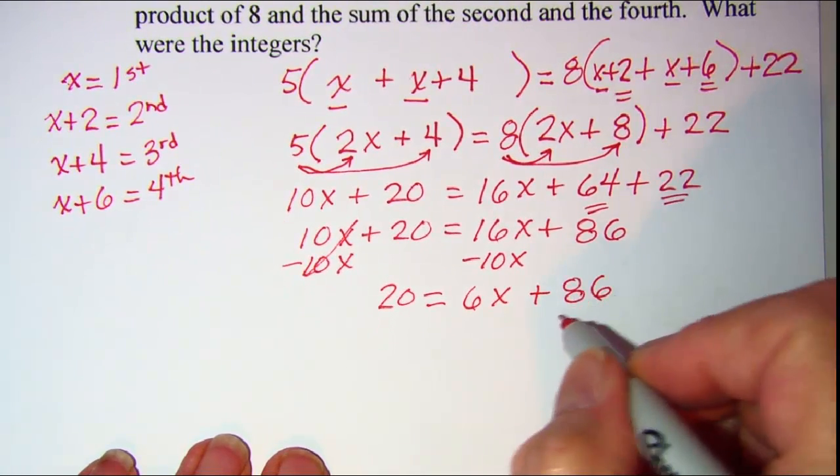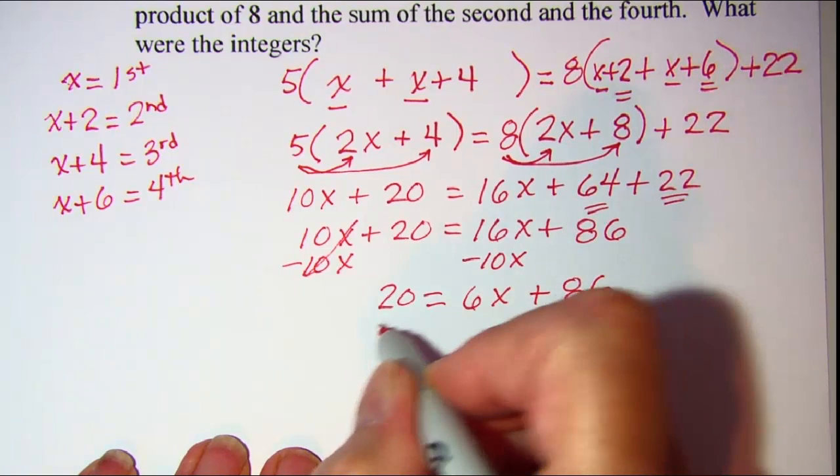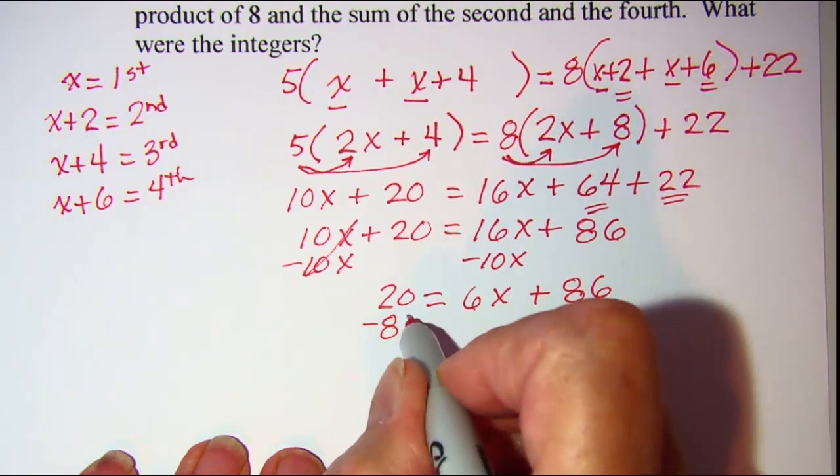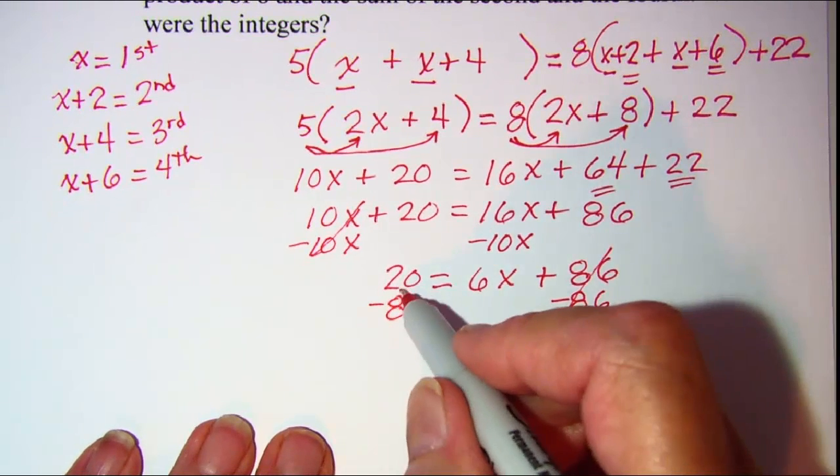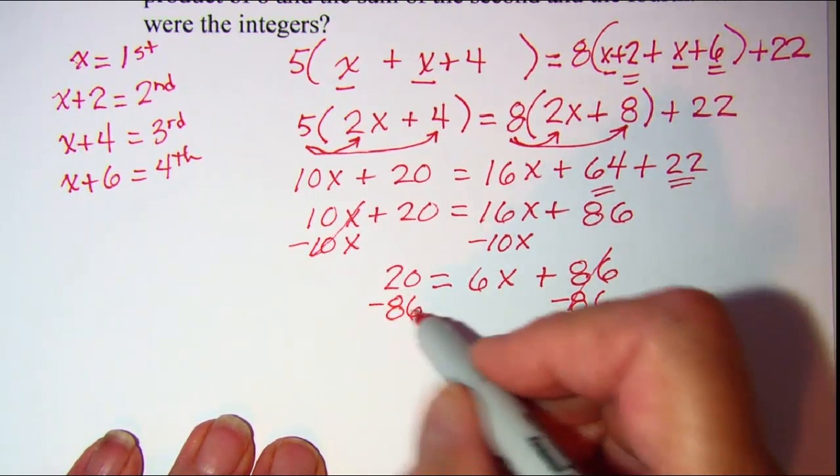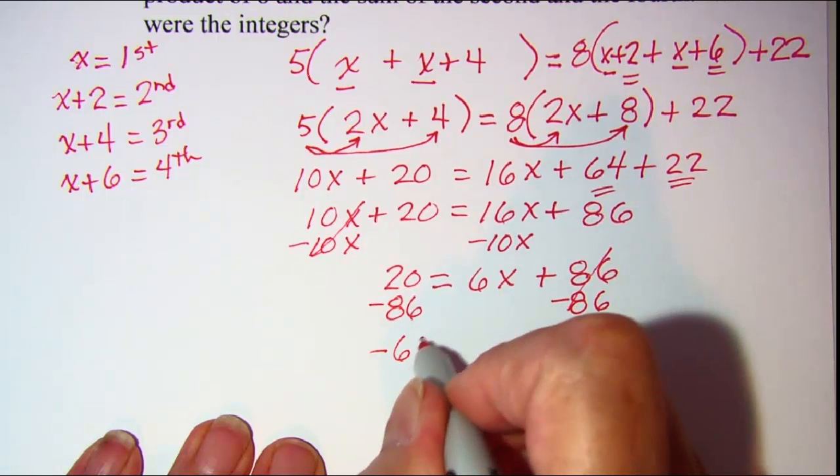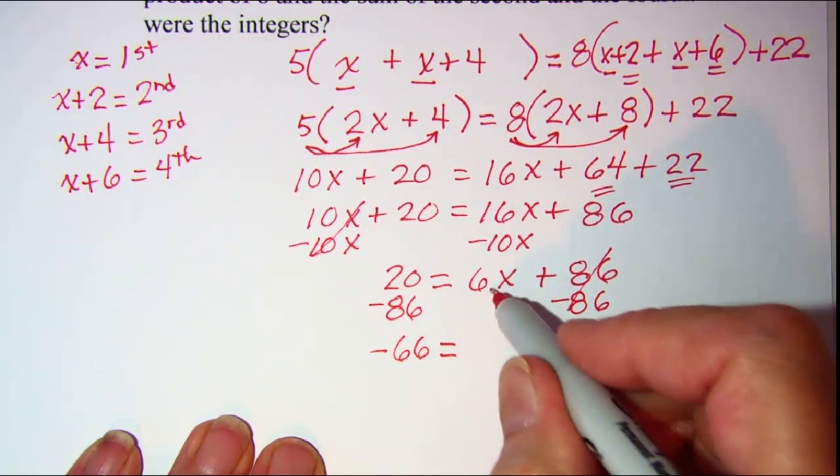Subtract 86 from both sides. So go away and I have a negative 66 on the left is equal to 6x.